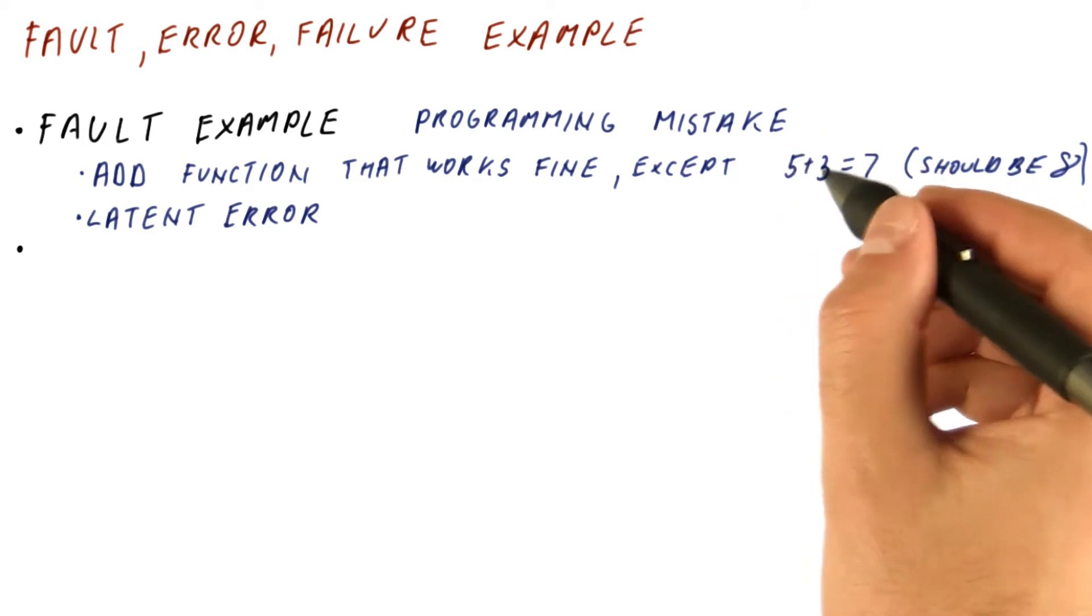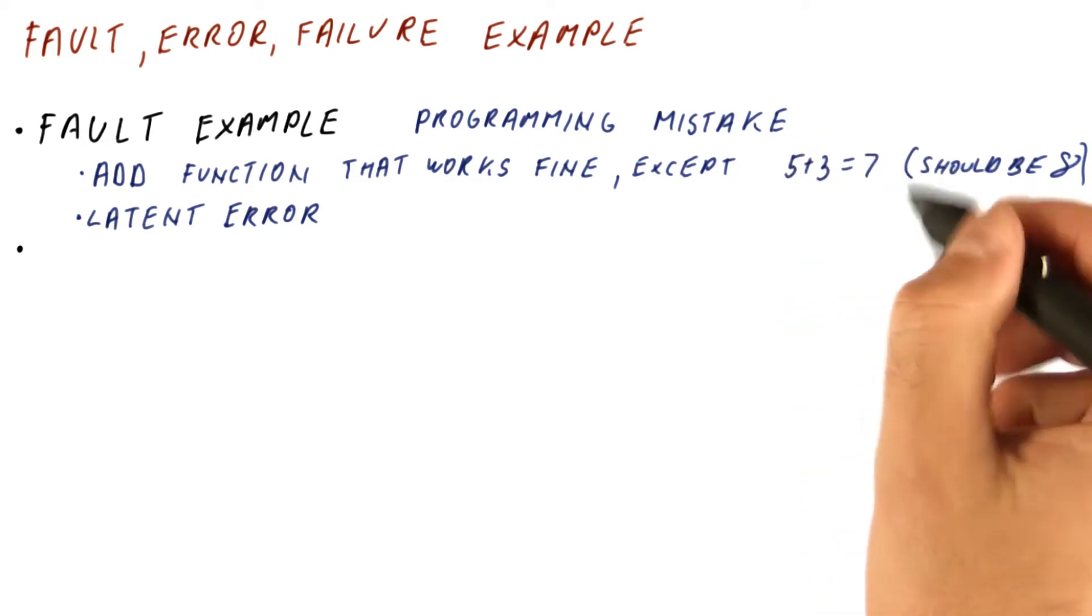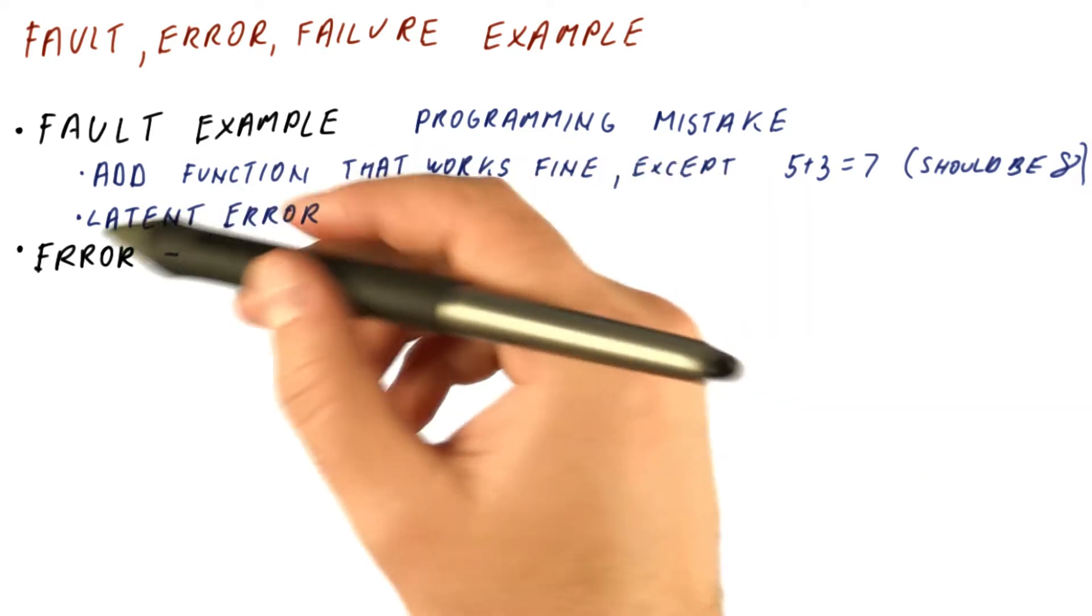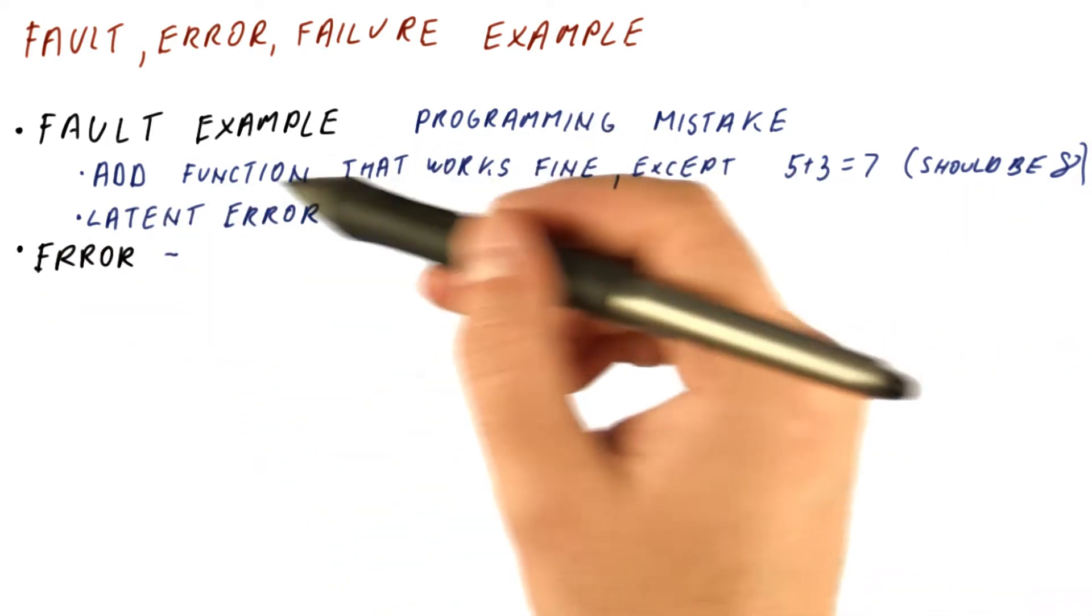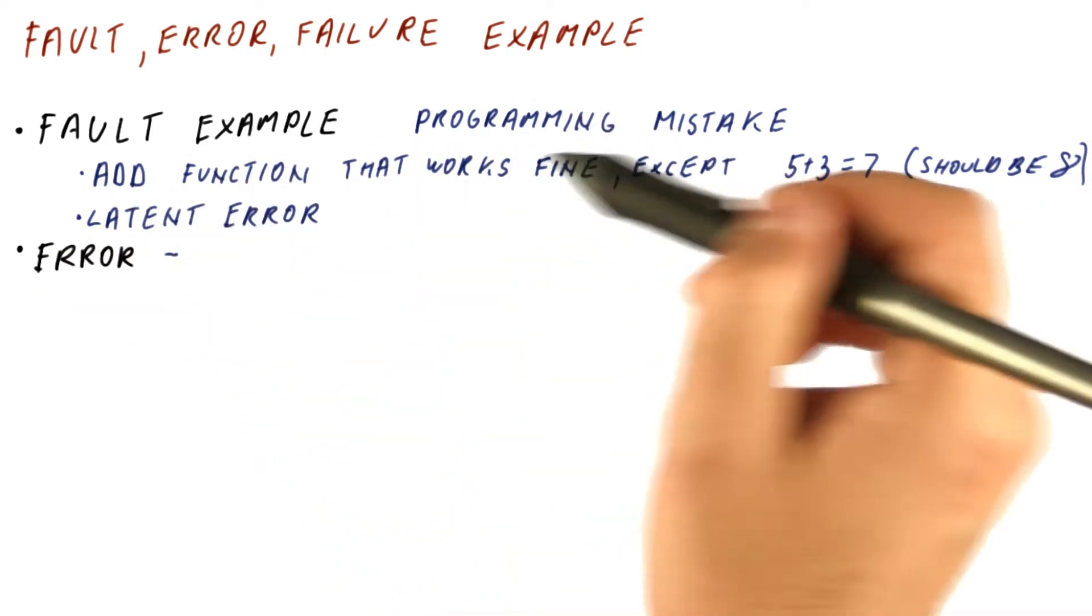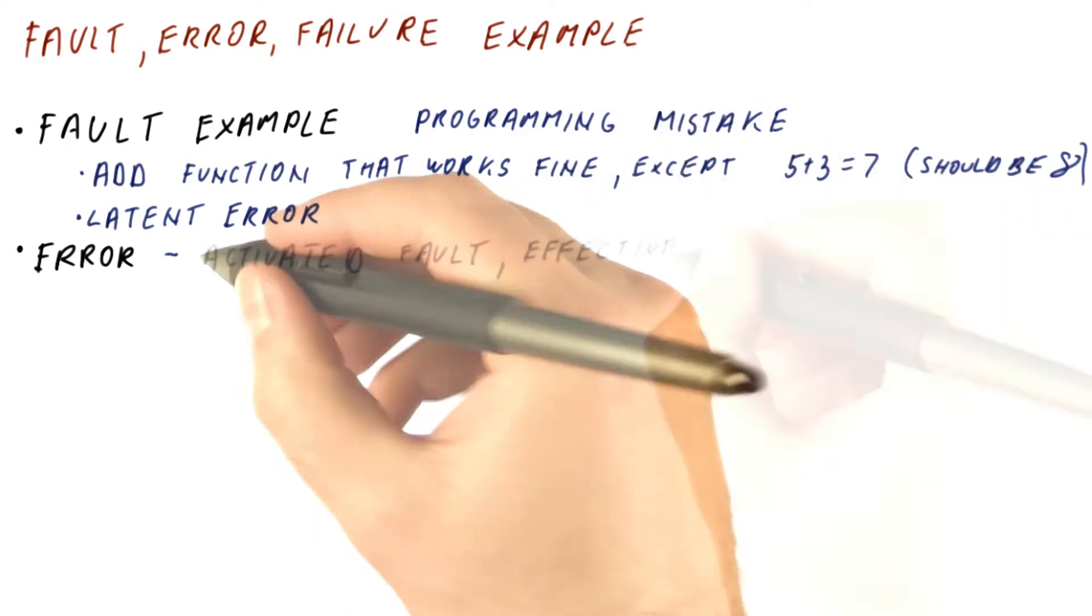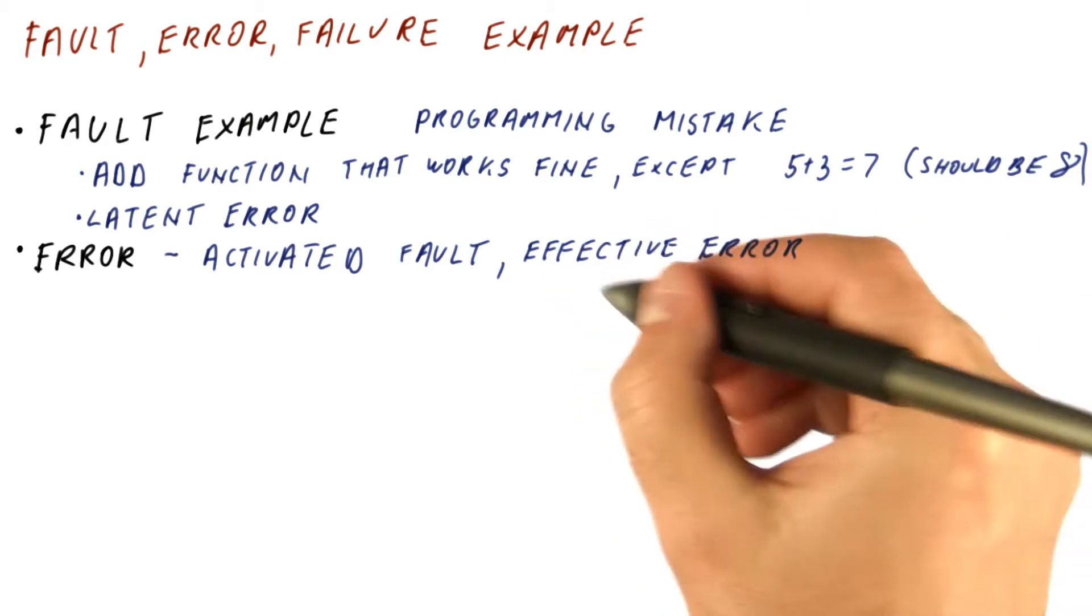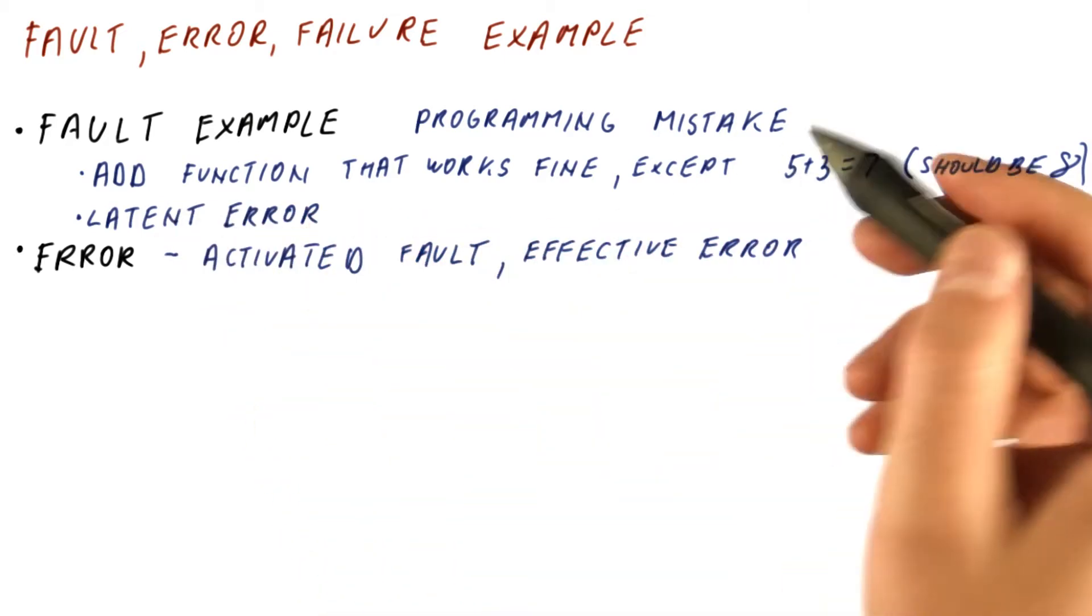So when we actually execute 5 plus 3 and get 7 in some register, we now have an error. If the error is a result of some sort of latent error like this, basically a programming error, we say that the fault has been activated, or that we now have an effective error as opposed to a latent one.